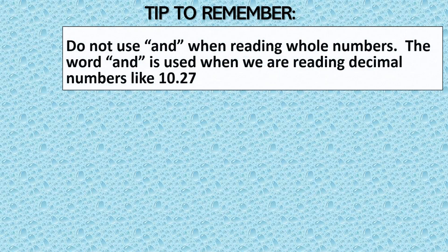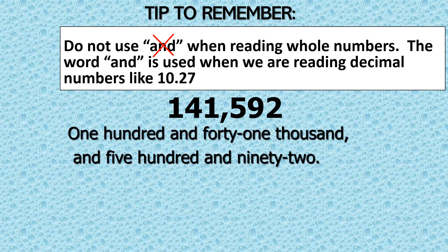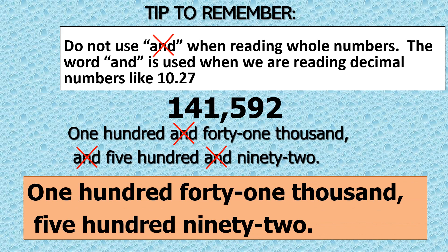Tip: Do not use 'and' when reading whole numbers. The word 'and' is used when we are reading decimal numbers, like '10 and 27 hundredths.' For example, we don't say '100 and 41,000 and 592.' Instead, we say...